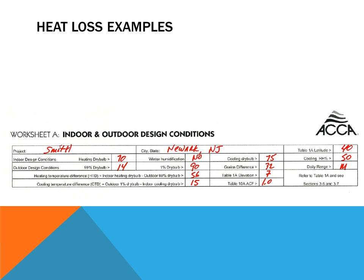Looking at Worksheet A from Manual J, this worksheet covers the basic information of the house. When you first do an inspection, you write down the customer name or project name and record the indoor and outdoor design conditions. This is the very beginning as you inspect the house. For new construction, if you have a blueprint, you will estimate it based on the location where the house will be built.